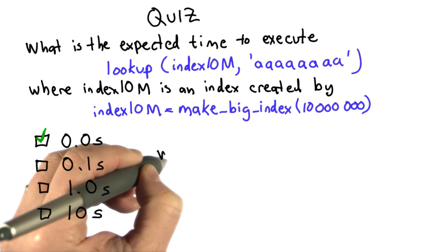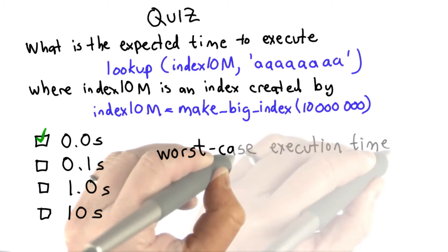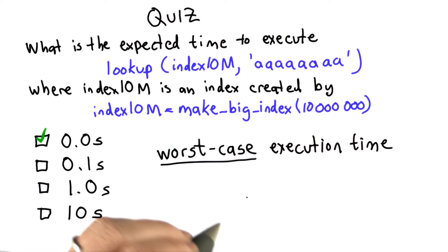What we usually care about when we analyze programs is what's called the worst case execution time. That's the case where the input for a given size takes the longest possible time to run.